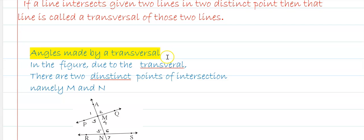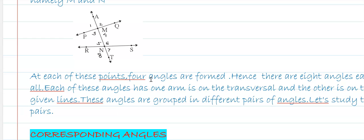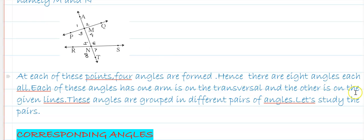Now, angles made by the transversal. Due to the transversal, there are two distinct points of intersection, namely M and N. At each of these points, four angles are formed. At point M, four angles — 1, 2, 3, 4 — are formed. Hence, there are 8 angles in total: 1, 2, 3, 4, 5, 6, 7, 8. Each of these angles has one arm on the transversal and the other arm on the given lines.